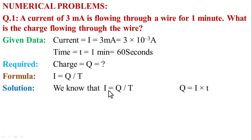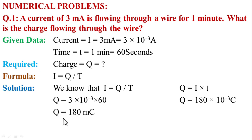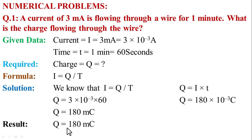In the solution, we know that I is equal to Q upon T. This implies that Q is equal to I multiplied by T. Putting the values: Q is equal to 3 multiplied by 10 raised to the power minus 3, multiplied by time 60 seconds. Now, 3 multiplied by 60 is equal to 180. So Q is equal to 180 multiplied by 10 raised to the power minus 3 coulomb. We can say that charge Q is equal to 180 milli-coulomb, since milli-coulomb is denoted by 10 raised to the power minus 3. The result: charge = 180 milli-coulomb.